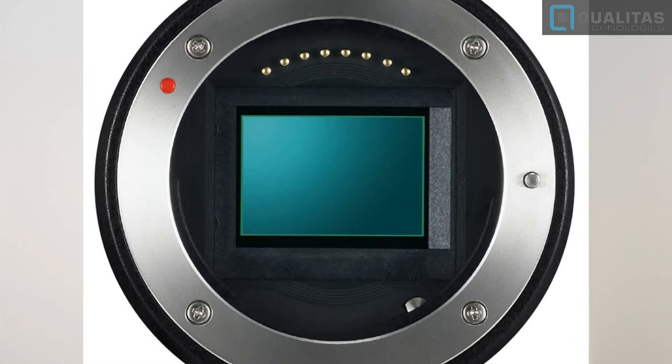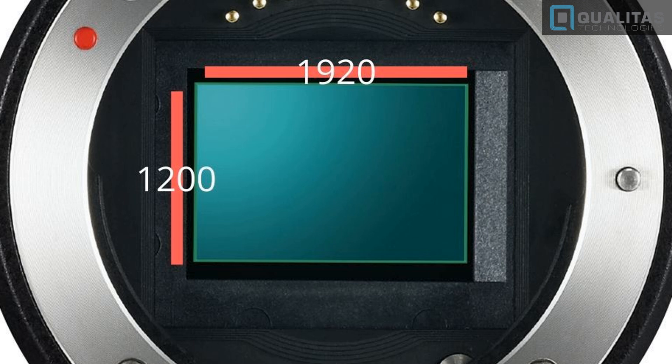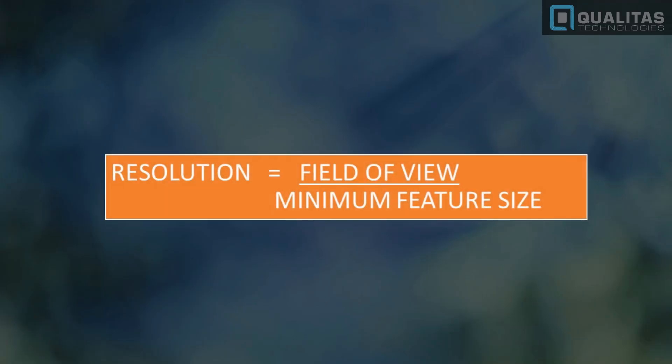The next parameter is resolution — probably the one you've heard the most. Resolution is the number of pixels present in the camera sensor. For instance, a camera which is 1920 pixels by 1200 pixels means the image captured will be represented by 1920 by 1200, or roughly 2.3 megapixels in size. Resolution is calculated by field of view divided by the minimum feature size to be inspected.